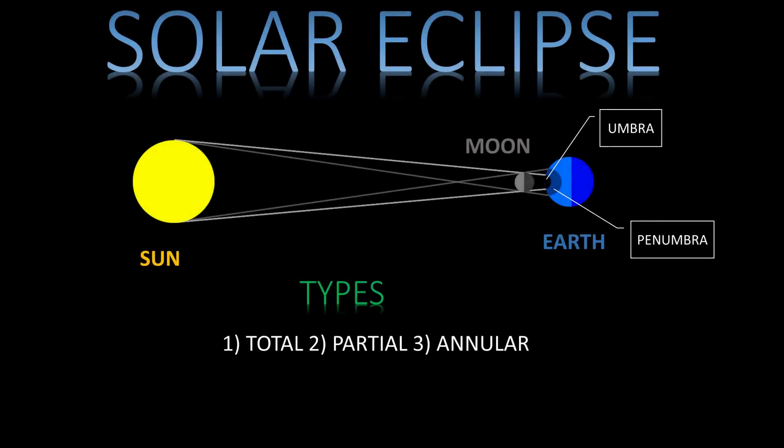We are going to discuss two types of solar eclipses: total and annular. A total eclipse is characterized by a period where the sun is not visible at all from the earth's surface. This is known as totality.